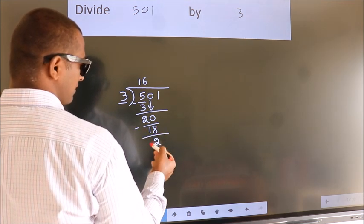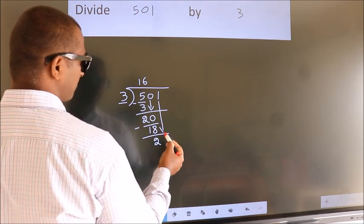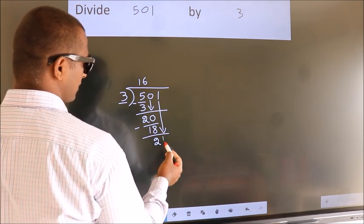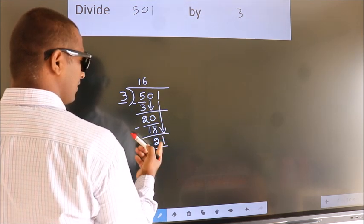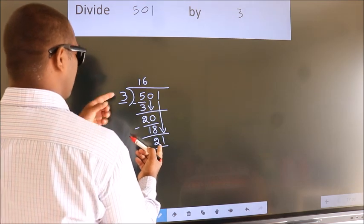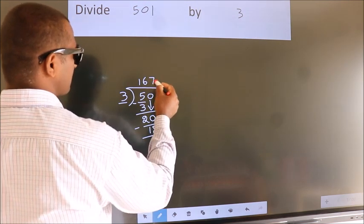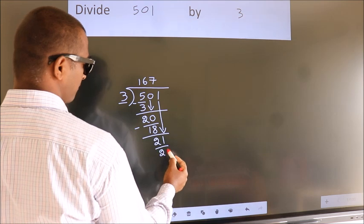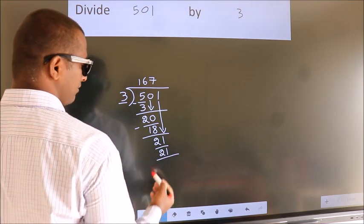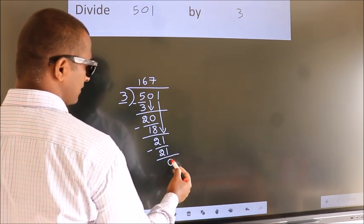After this, bring down the beside number. So, 1 down. So, 21. When do we get 21? In 3 table, 3 7 21. Now, we subtract. We get 0.